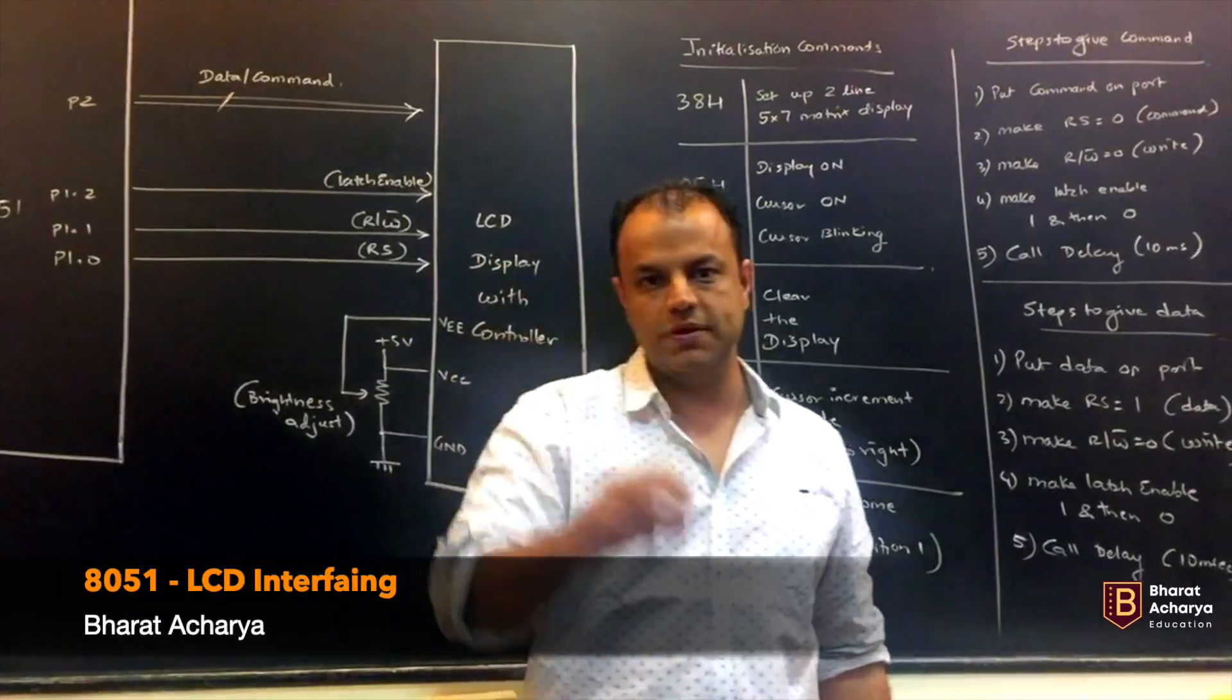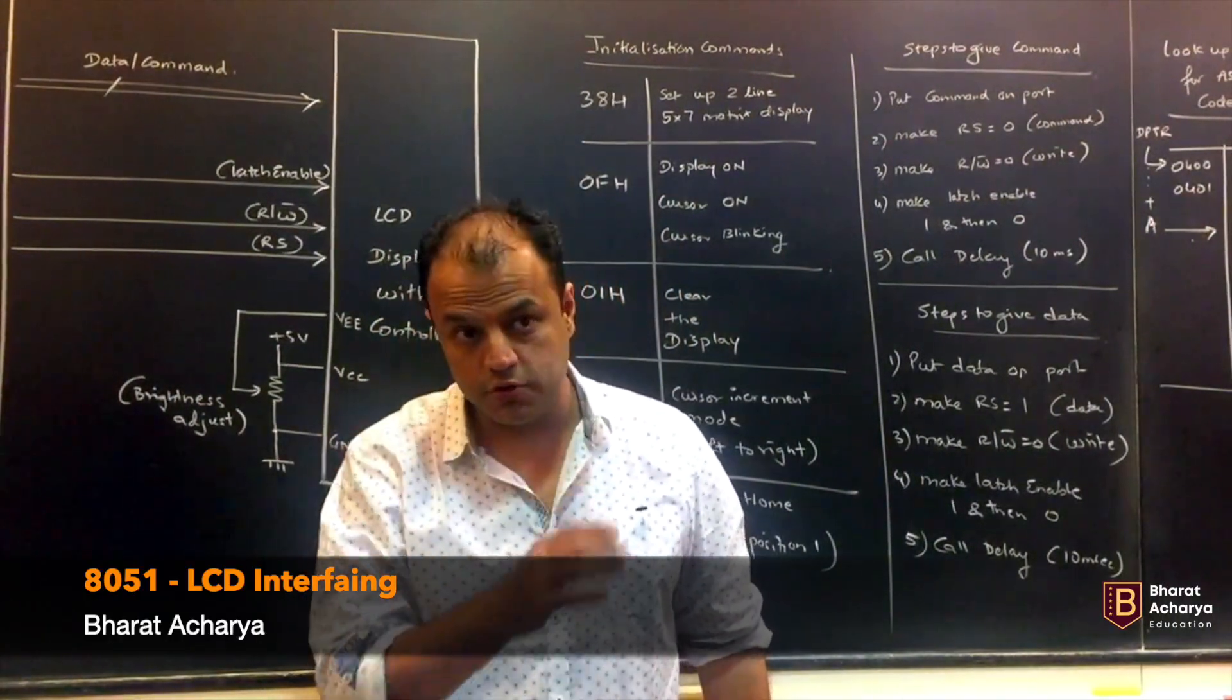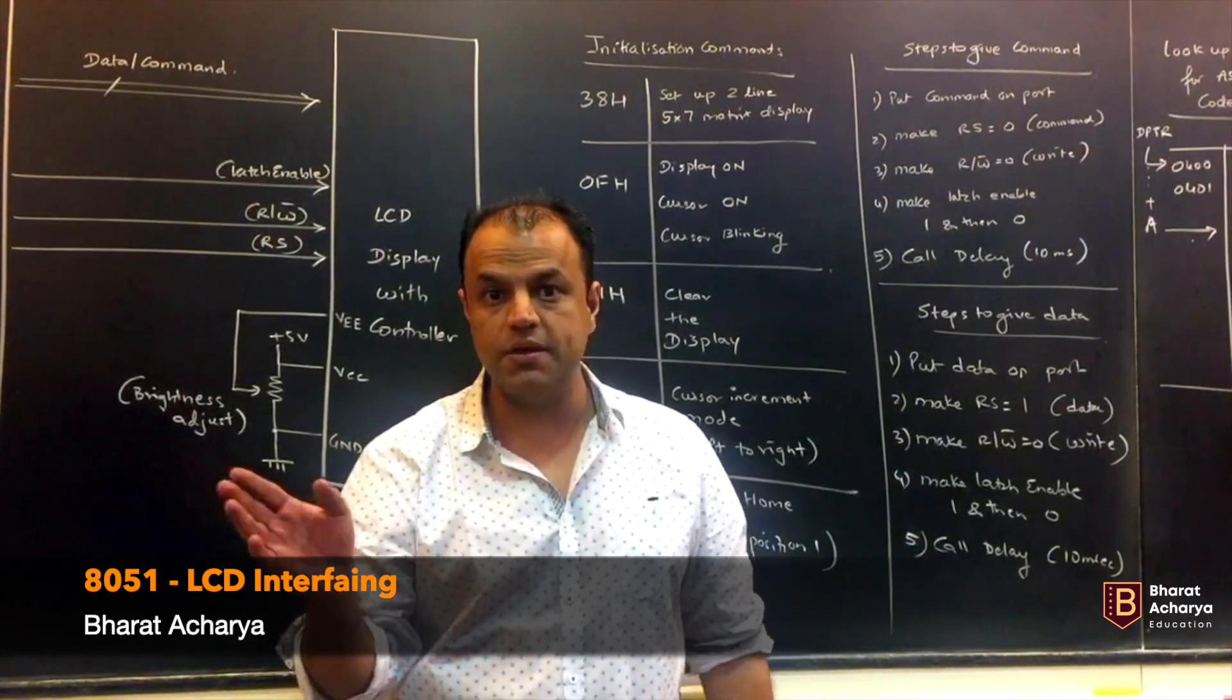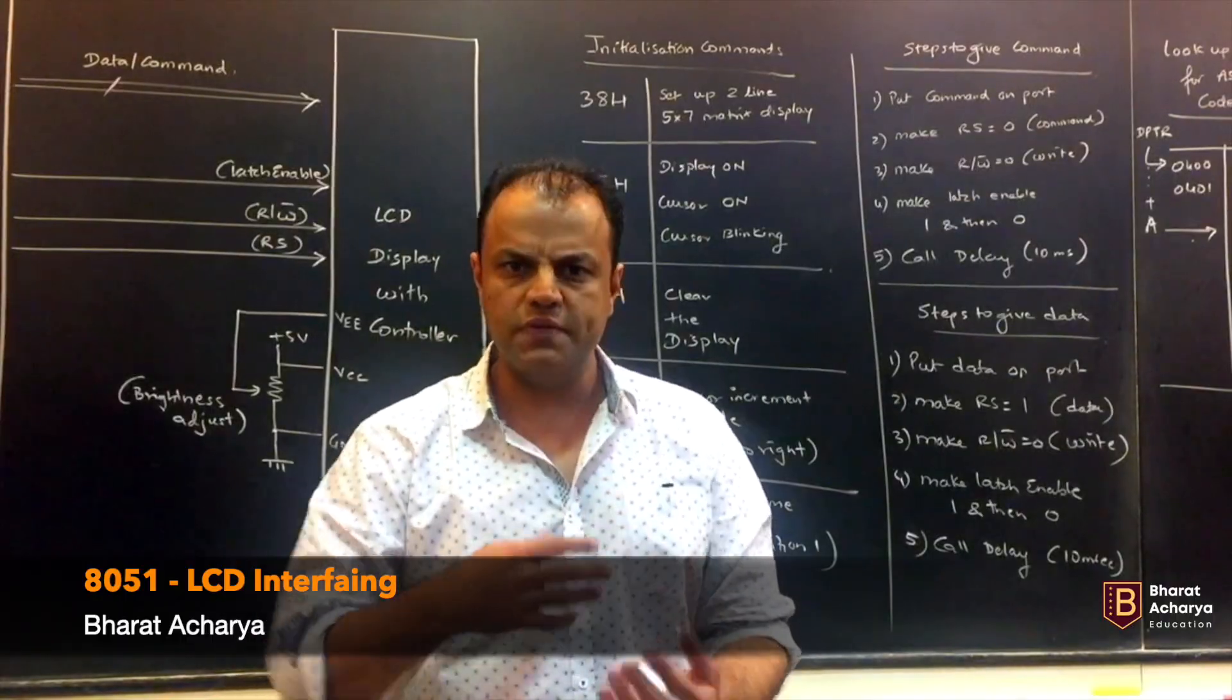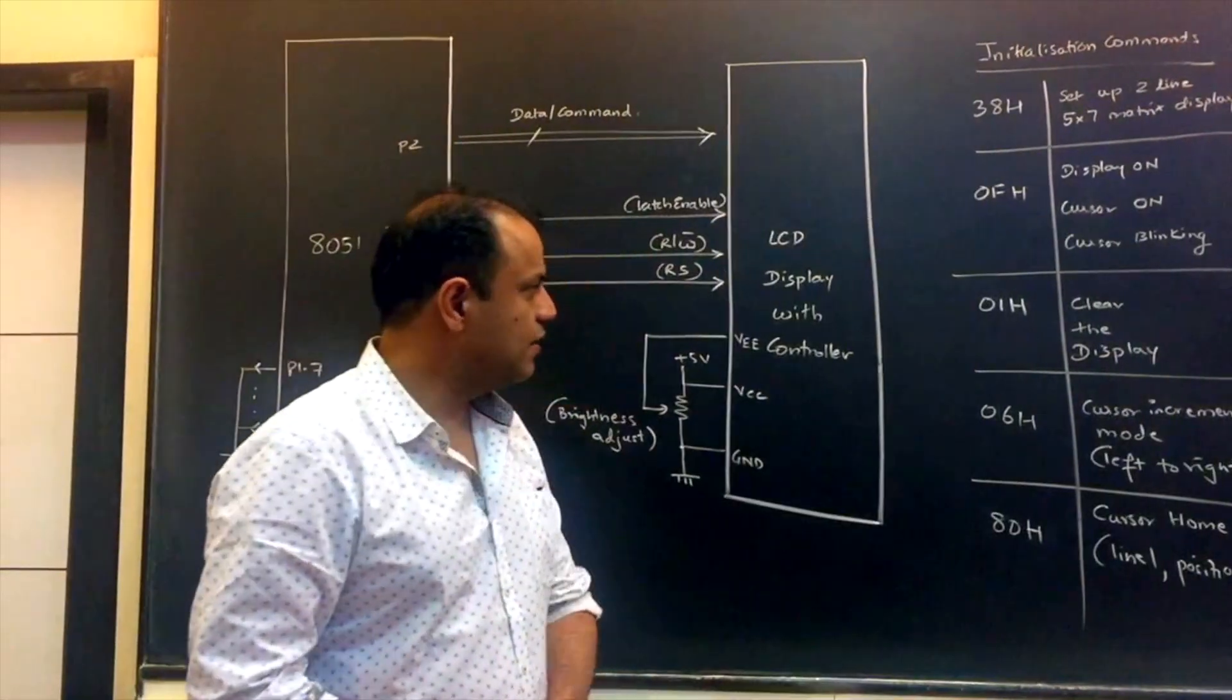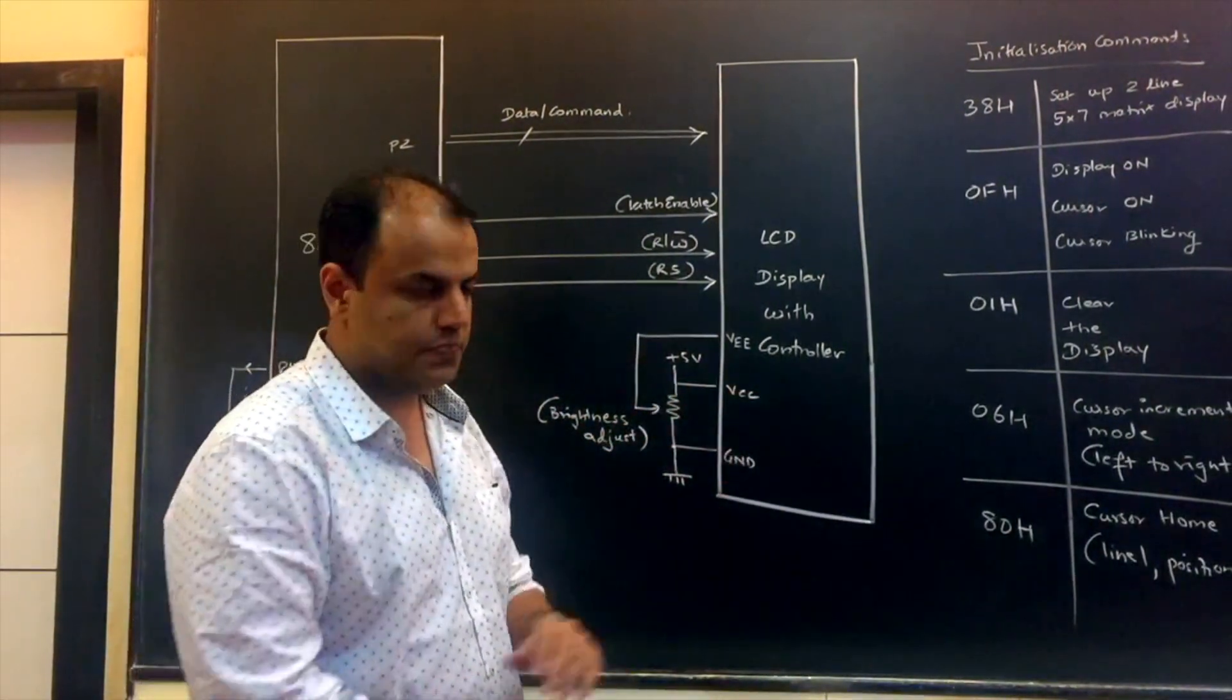Now, LCD display can be a static display, can be a scrolling display, can be a vertical scroll, can be a horizontal scroll. The scroll may go from left to right, right to left. Even a static display can be left aligned, can be right aligned. So there are various ways in which the display can be configured. That's why you don't connect a display directly with the processor. The display comes with its own controller.